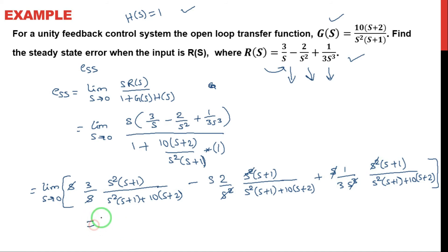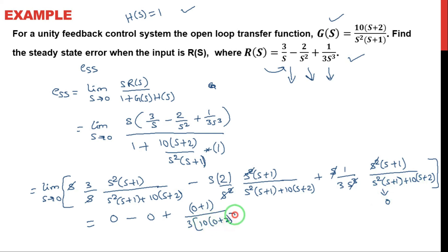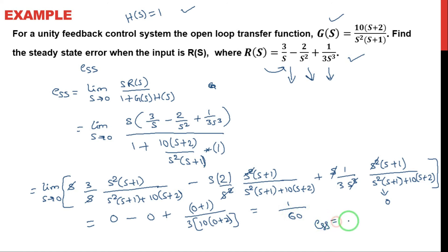Now apply the limit S tends to 0. The first term: S tends to 0, so complete term becomes 0. The second term: S multiplication means S tends to 0, so complete term is 0. The third term has no S multiplication remaining. So numerator becomes 0 plus 0 plus 1/3. In the denominator, the first part goes to 0; the remaining part is 10 into (s+2), which at s=0 gives 10 into 2. Now solving: 1/3 divided by (10 × 2) equals 1/60. So finally, the steady-state error E_ss is equal to 1/60.